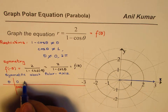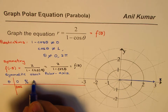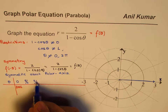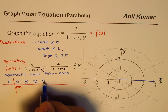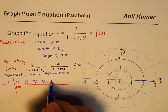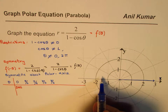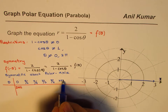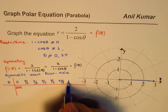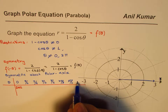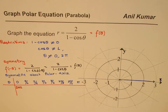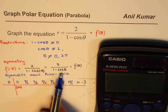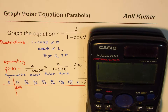Let's select a few values in between to find a reasonable graph. We'll take π/6, π/4, π/3, π/2, 2π/3, 5π/6, and then π. These are the values we'll calculate for the function f(θ) = 2 over 1 minus cos θ. Let's start with π/6.